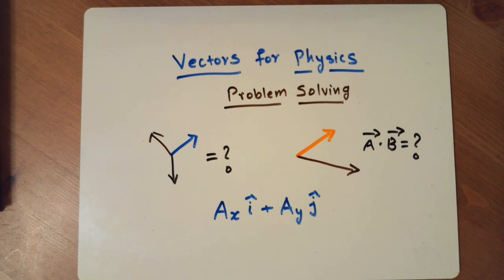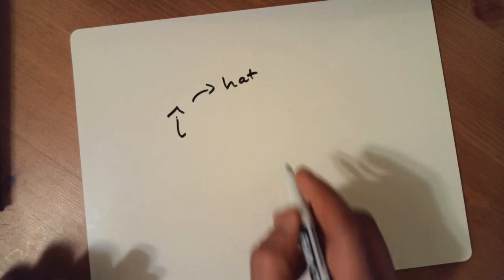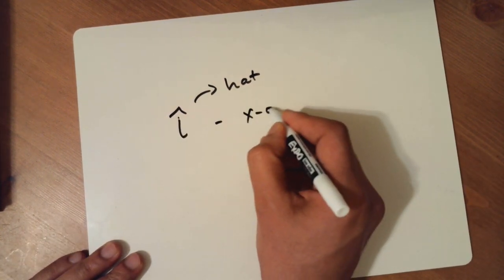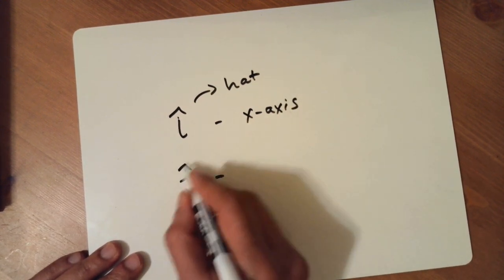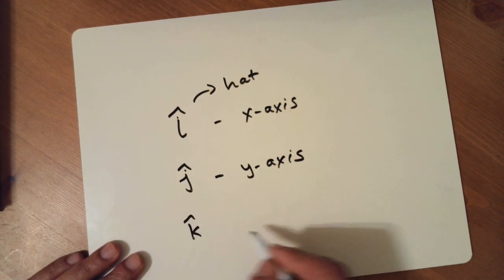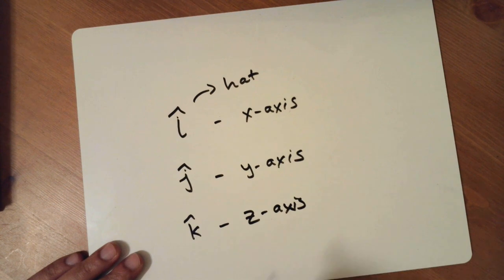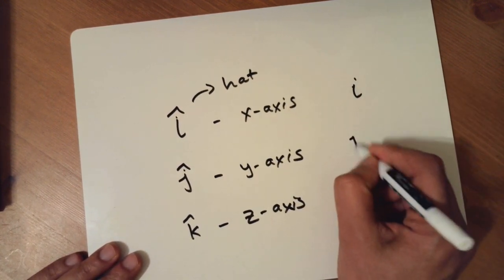Before we get started, I want to clarify one thing about notation. While writing vectors, I use i-hat and j-hat notation. I'll write it here once again to be clear. The unit vector along the x-axis I write as i with a hat on top — called i-hat. The unit vector along the y-axis I call j-hat. If you had a z-axis, you would call that k-hat, but we're just sticking to two-dimensional vectors here.